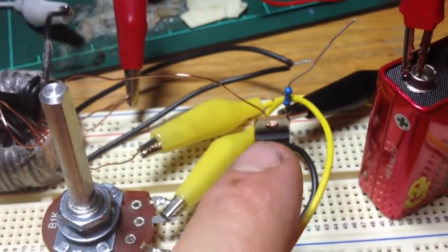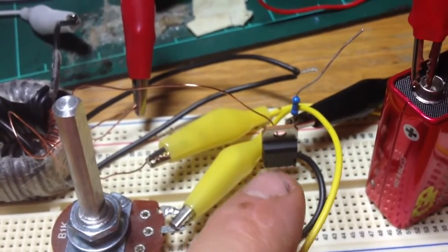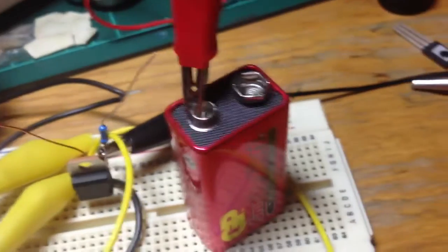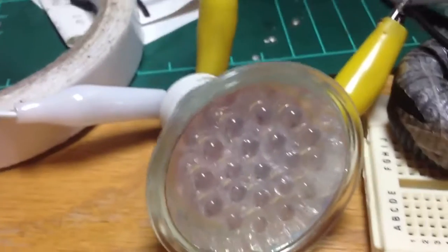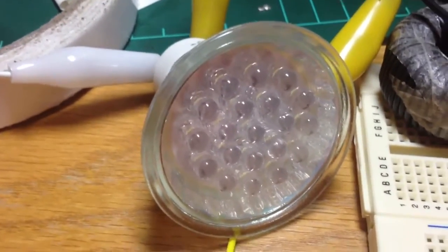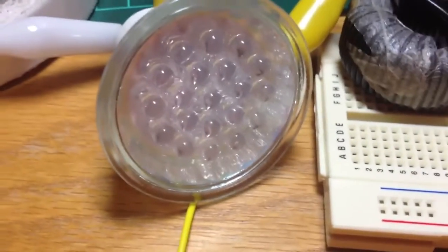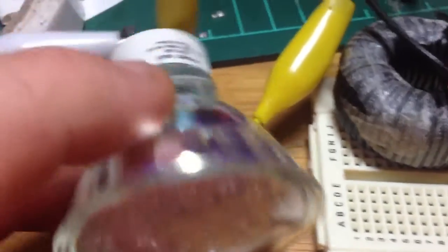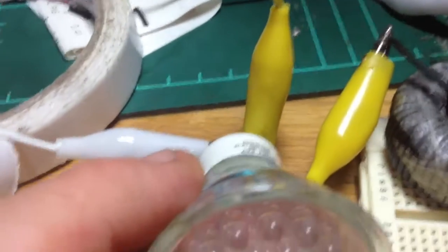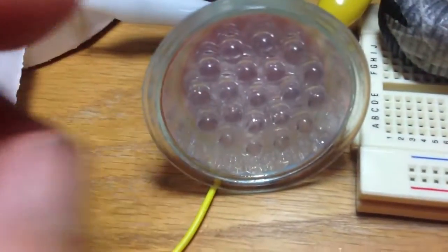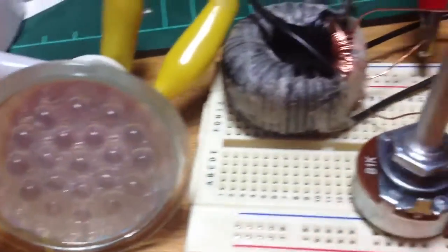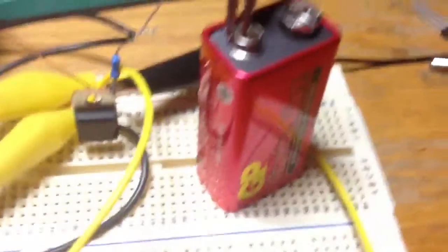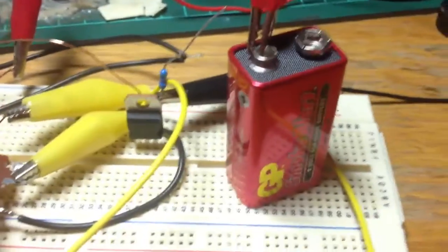We've got a MJE3055 transistor running it off 9 volts. This is a standard 240 volt LED light fitting. I don't know if we can pick that up. Can't pick that up. Anyway, it's 1 watt, 240 volt. And this is a 9 volt battery. I haven't got an amp meter hooked up to it yet.